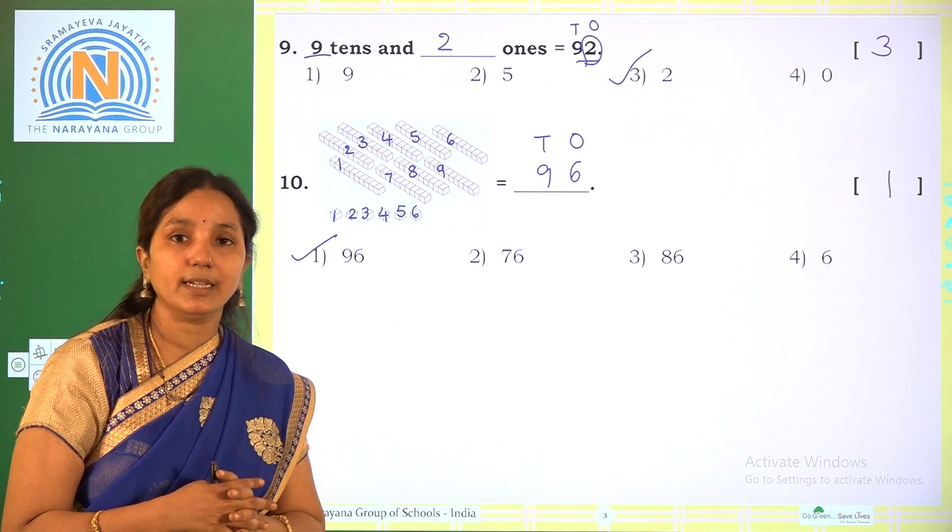Coming to the next sum. We have to count the blocks — how many tens blocks are there and how many ones blocks? So counting the tens: 1, 2, 3, 4, 5, 6, 7, 8, 9 — that is 9 tens. And how many ones? 1, 2, 3, 4, 5, 6 — that is 6 ones. So we get 96. Option 1 is 96, Option 2 is 76, Option 3 is 86, Option 4 is 6. The required option is 1.